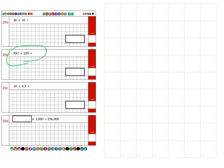Next, moving on to question 20b, which is 932, and we're going to multiply that by 100. So we take the 932 and we're going to be multiplying this by 100, which is two lots of multiplying by 10.